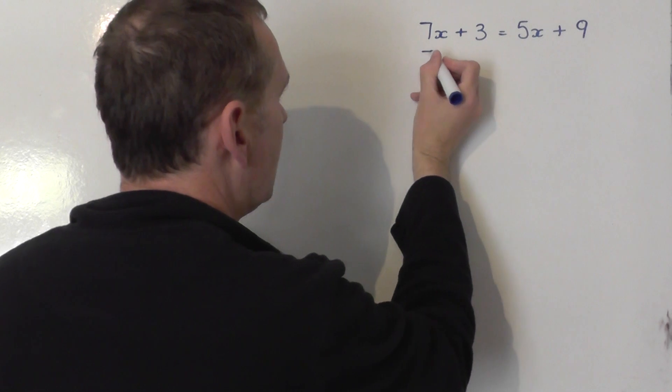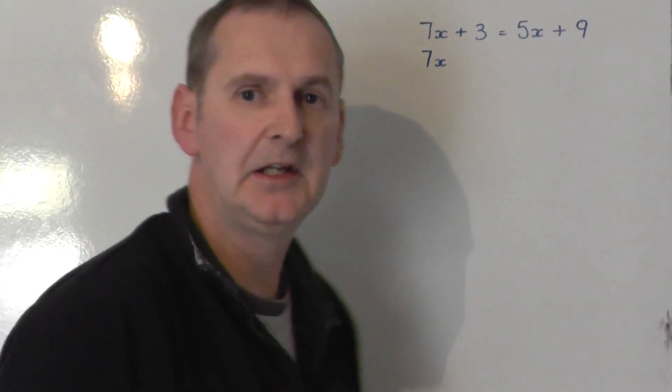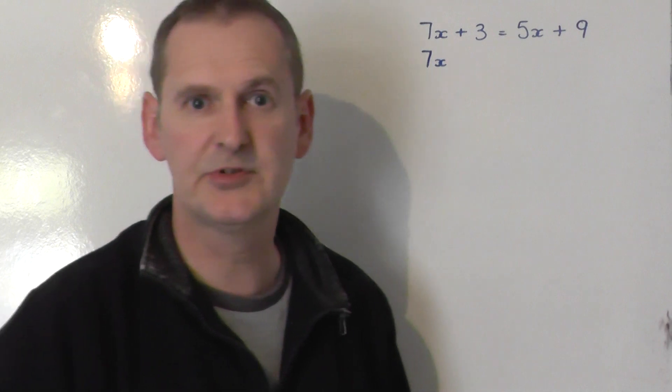The 7x, therefore, is already on the left-hand side, so I leave it alone. I don't need to swap sides.